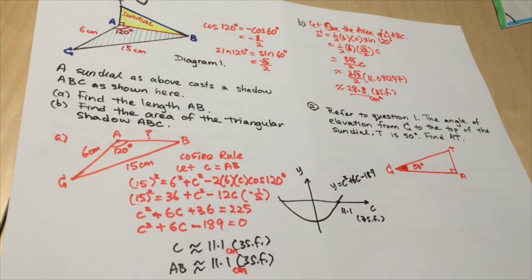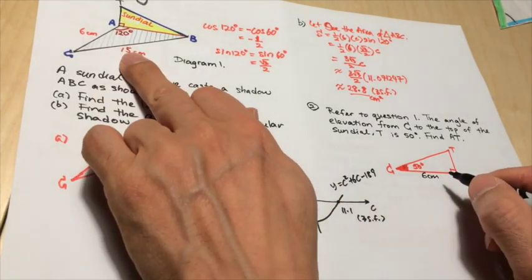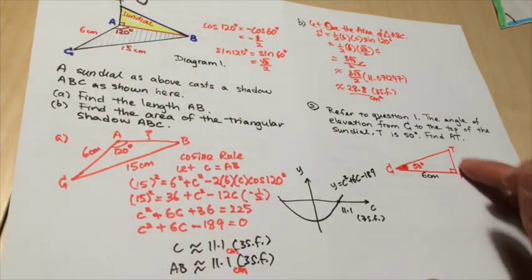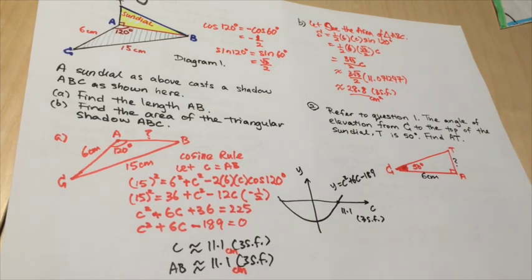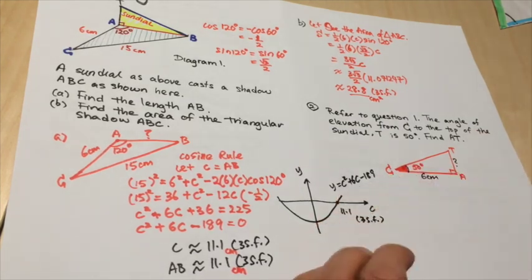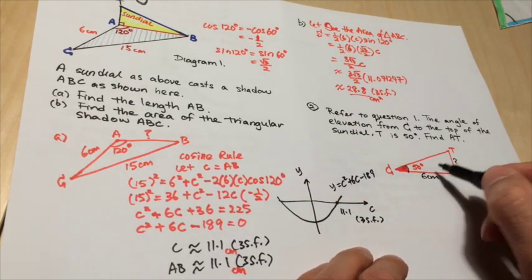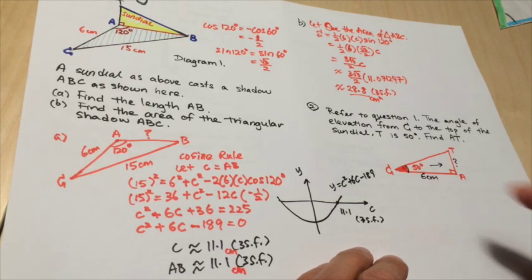Now, what do we know? Well, we know that AC is 6cm as given previously. And we do not know what AT is. All right. And we want to find AT. But we know the angle of elevation is 50 degrees. So now, what can I link the opposite and the adjacent and the angle together? Very good. That's tangent.